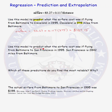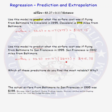Now let's use the model to predict what the airfare cost was if flying from Baltimore to San Francisco, knowing that San Francisco is 2,842 miles from Baltimore. We plug in 2,842 miles into our regression equation and get a predicted airfare of $415.78. Which of these predictions do you find most reliable, and why? What would you say if the actual airfare from Baltimore to San Francisco in 1995 was $198? Our model predicted $415, but the actual airfare was $198. How could we be so far off? Is this model good at predicting airfare?